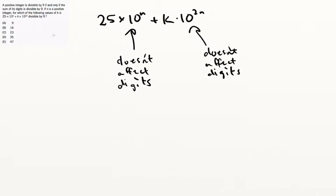So what we know is that for this first number, 25 times 10 to the n, that's going to give us 2 and a 5. So basically we have 2 plus 5 here. And we know that this 10 to the 2n is still not going to affect the digits. But what it's going to do is it's going to make the number larger than this number. So basically we're going to get, if we had 4 spaces for example, this would be the 10 to the 2n numbers and this would be the 10 to the n numbers.